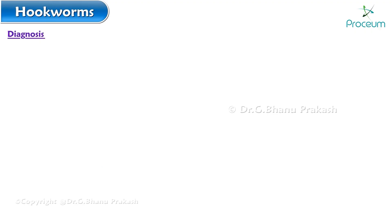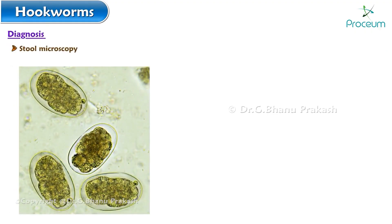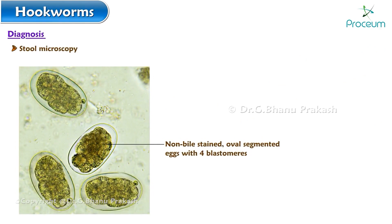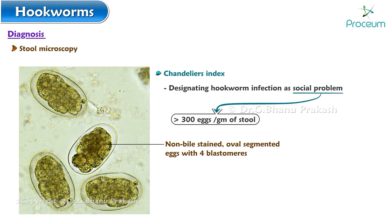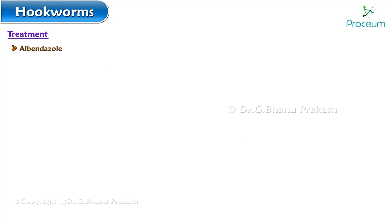Diagnosis is by stool microscopy for detection of characteristic non-bile stained oval segmented eggs with four blastomeres. Chandler's index is used in designating hookworm infection as a social problem; the presence of more than 300 eggs per gram of stool is termed a social problem. Treatment is done with albendazole, which is the drug of choice; mebendazole or pyrantel pamoate are the alternative drugs used.